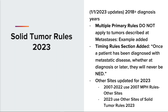The timing rules section was also updated. Once a patient has been diagnosed with metastatic disease, whether at diagnosis or later, they will never be considered NED. The other sites rules section was updated for 2023. These rules apply for diagnosis years January 1, 2023 and forward only. So if the other site diagnosis is prior to 2023, you would use the previous version of the rules.